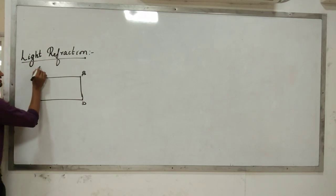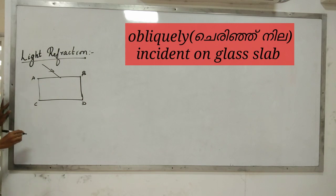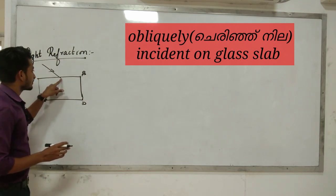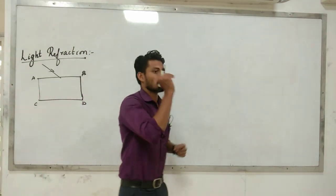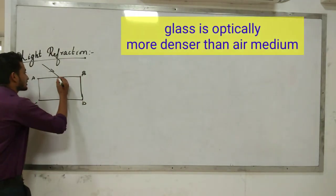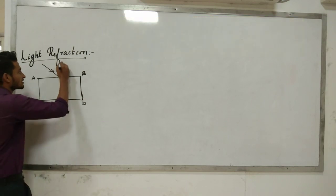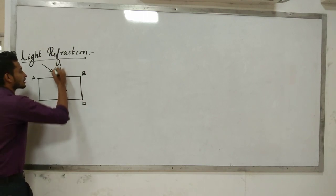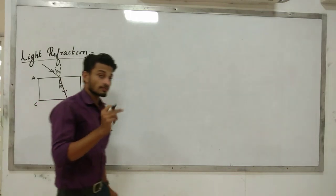Now, light. If the light is incident on the glass slab, it will travel through the glass. As it travels through the glass, the light will bend. By drawing a diagram, we can identify the incident angle and the refracted angle.